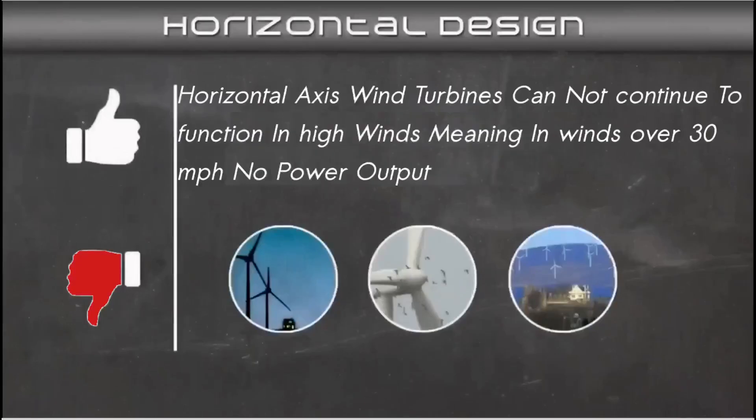Horizontal wind turbines cannot function in high winds and have to brake or shut down, usually in winds over 30 miles per hour.